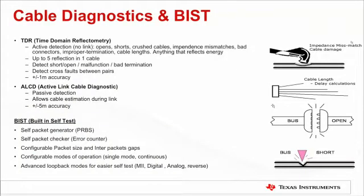The TM4C129X devices use a combination of time domain reflectometry and active link cable diagnostics to test and fully diagnose cables with high accuracy in offline or live networks. This feature is particularly useful in identifying bus opens, bus shorts, and impedance mismatches. The cable diagnostics can be started and monitored using the bits in the Ethernet PHY cable diagnostic control register.